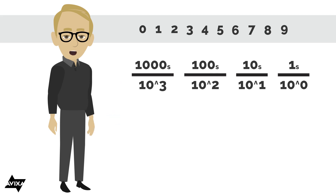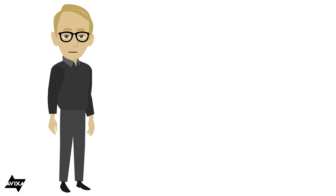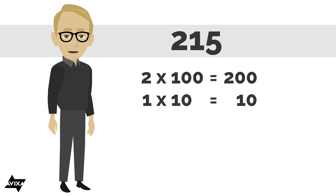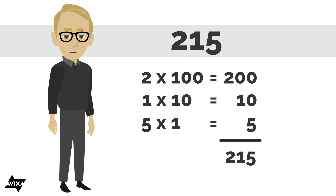And I can continue this on out if I wish. So we take a number that we'd be familiar with, such as 215. This tells us that I have 2 in the hundreds place, so 2 times 100; 1 in the tens place, so 1 times 10; and 5 in the ones place, 5 times 1. We add together 200, 10, and 5, and we get 215. And that's our base 10, what we also know as the decimal system.